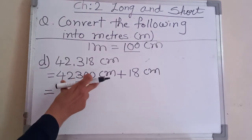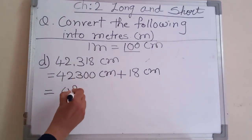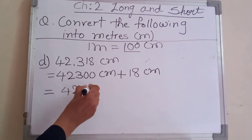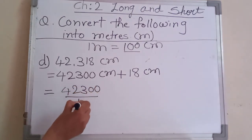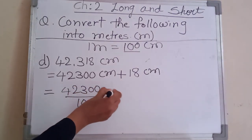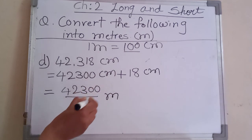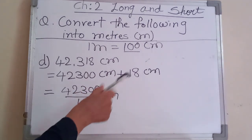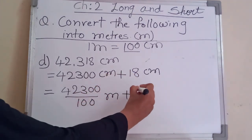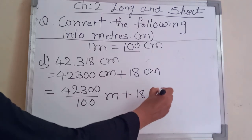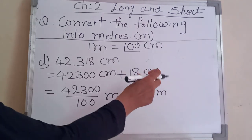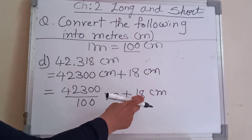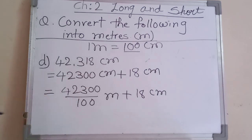Now convert to meter: forty two thousand three hundred divided by hundred — immediately write meter. Then plus eighteen centimeter as it is, because this number is smaller than hundred centimeter, so there is no need to change it.